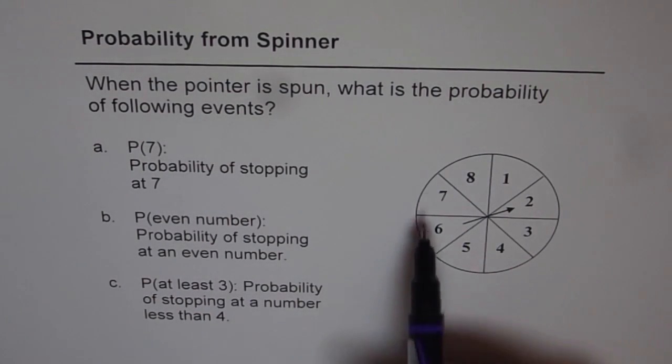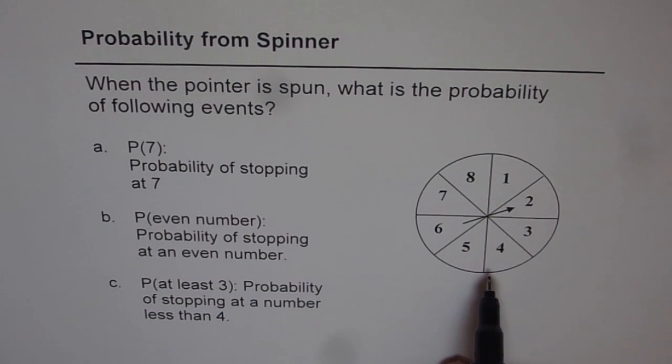So we have a wheel here divided into 8 equal parts. The pointer shown is pointing at 2 for the time being. Now we need to figure out these probabilities for the 3 events mentioned here.